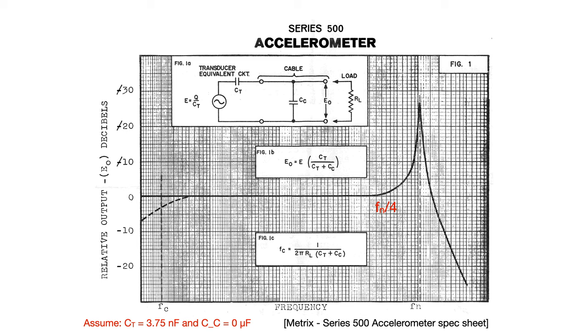At the low frequency end of this plot, the curve tends to curve downward. This is a result of the accelerometer serving as a high-pass filter and filtering out low frequencies due to the capacitance and the resistance of the load to which the accelerometer is attached.